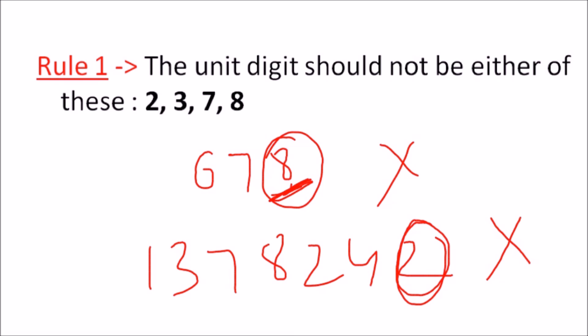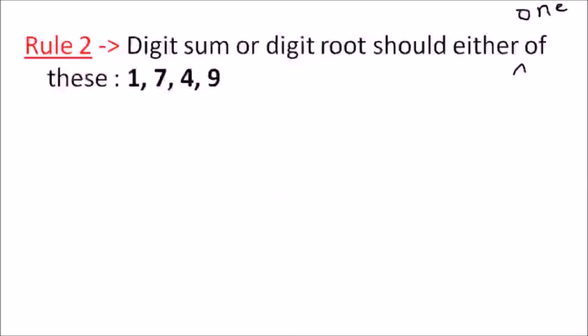Now, what about those numbers which end with the digits 1, 4, 5, or 9? That's where Rule number 2 comes in. Rule 2 says that the digit sum or digit root should be one of these: 1, 4, 7, or 9.